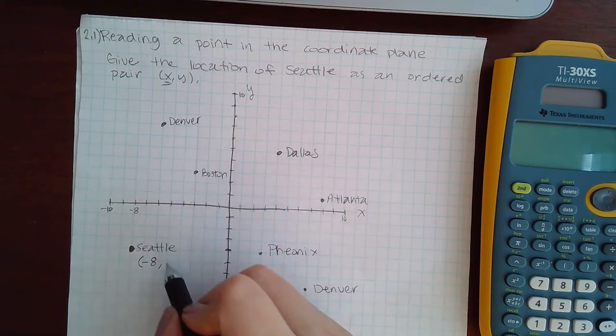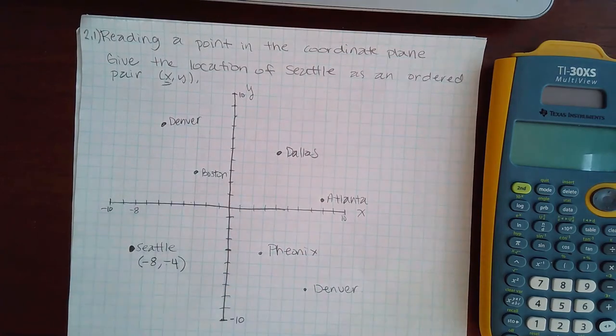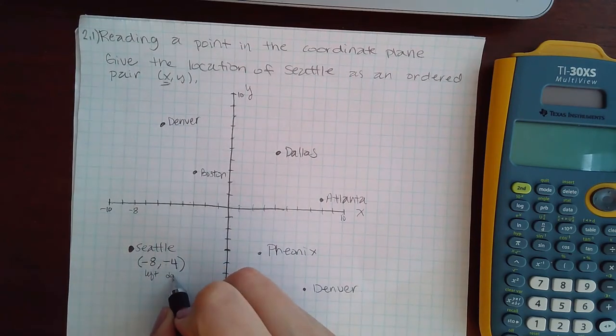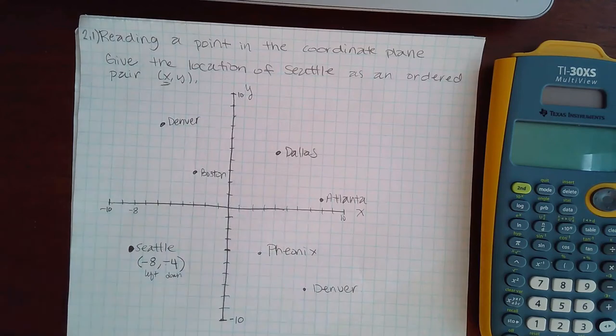So the location of Seattle is negative 8, so that means to the left, and then negative 4 because that means down. Okay, so negative means to the left for the x-coordinate, and negative means down for the y-coordinate.